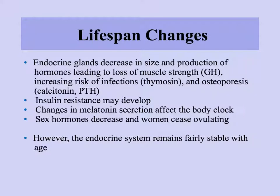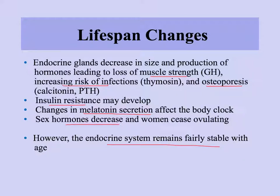As you age, the endocrine system undergoes some changes: glands decrease in size, hormone production goes down leading to increased risk of infection and osteoporosis, muscle strength decreases, and insulin resistance may develop — especially with weight gain. Sleep problems become more common as melatonin secretion weakens. Sex hormones decrease overall and women cease ovulating at menopause. However, the endocrine system generally remains fairly stable with age — unlike some other systems, it probably stays in the best shape as we age.